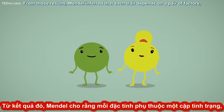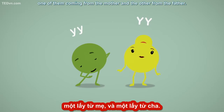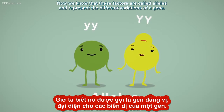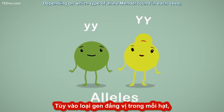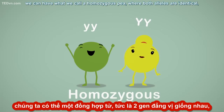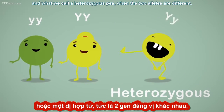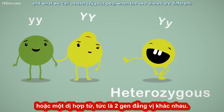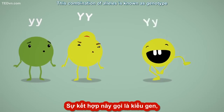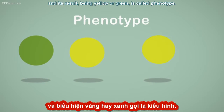He called this hidden trait the recessive trait. From those results, Mendel inferred that each trait depends on a pair of factors, one of them coming from the mother and the other from the father. Now we know that these factors are called alleles and represent the different variations of a gene. Depending on which type of allele is found in each seed, we can have what we call a homozygous pea, where both alleles are identical, and what we call a heterozygous pea, when the two alleles are different. This combination of alleles is known as genotype, and its result — being yellow or green — is called phenotype.